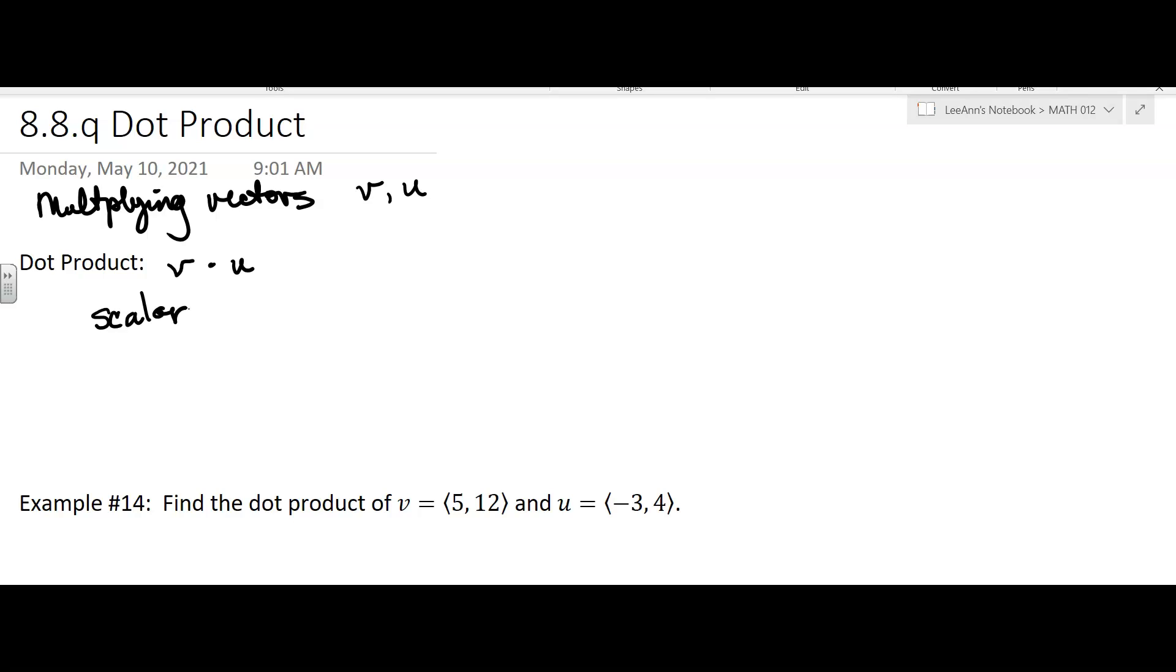You're going to get a real number for the answer for a dot product. The other type that we're not going to do this semester is called a cross product. You'll study it in other math classes, but it's V cross U, and that's a different thing.